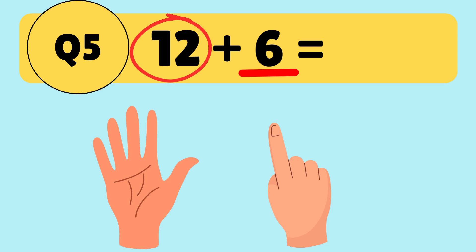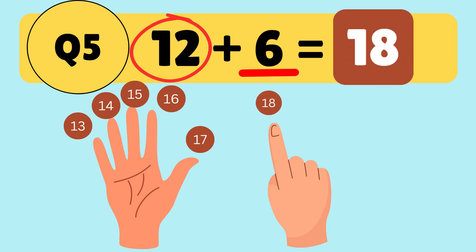Now hold up 6 fingers and we'll count up starting from 12. Ready? Let's go! 12, 13, 14, 15, 16, 17, 18. So 12 plus 6 is equal to 18. Great job handling those bigger numbers!